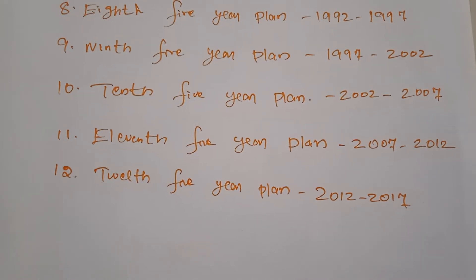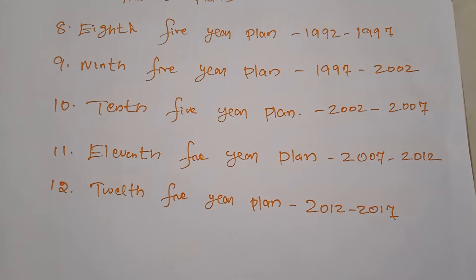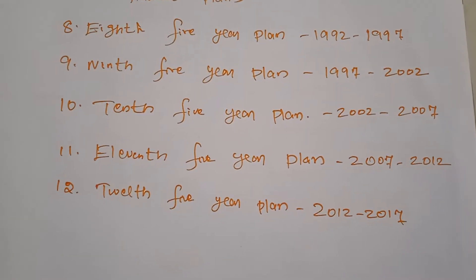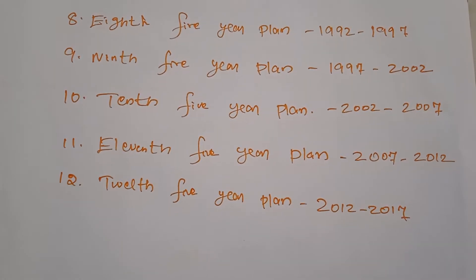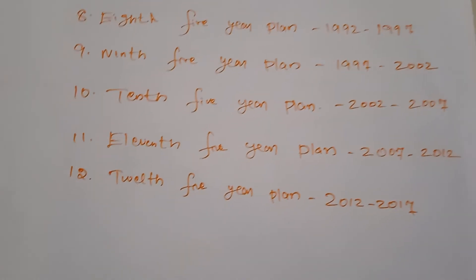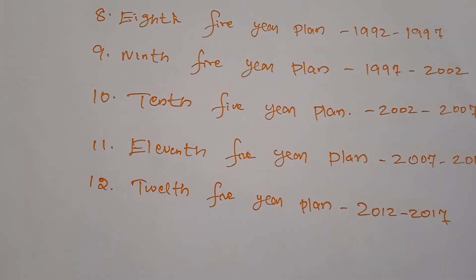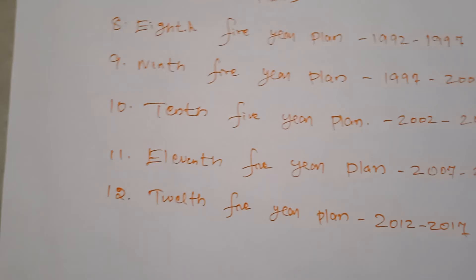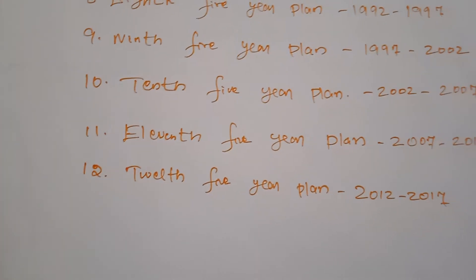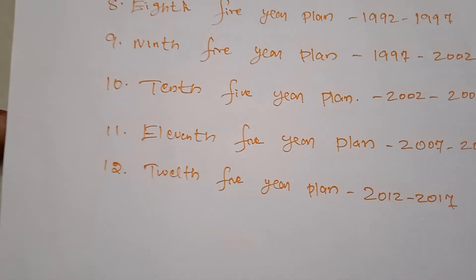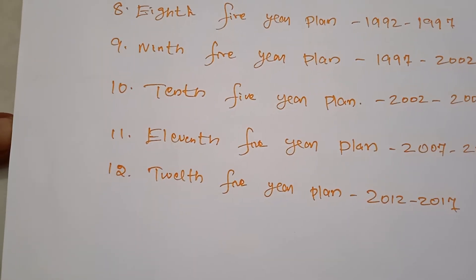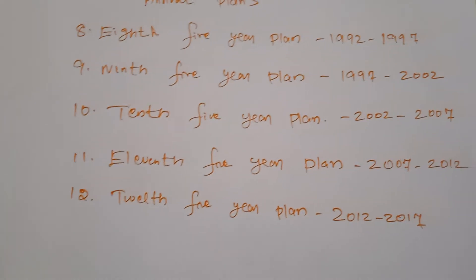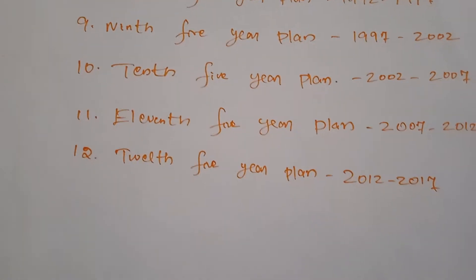The second five-year plan focused on industrial development. During the first five-year plan we had attained self-sufficiency in food production, so the government then decided to give importance to the industrial sector as well. The third five-year plan is also called the Khandi Yojana. The main target of this plan was to make the economy independent and reach a self-propelled position.